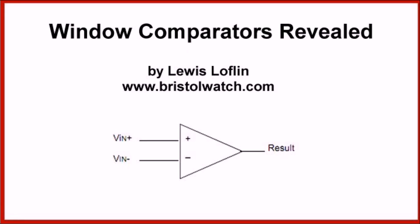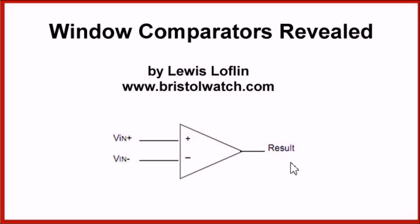In my earlier video on basic comparators, we learned that a comparator is simply an op-amp with no feedback. The relationship between the plus input and the minus input will turn the output either all the way on or all the way off. In this application, we will use two comparator circuits in tandem to give us an output that is between two voltage levels — not above it and not below it.